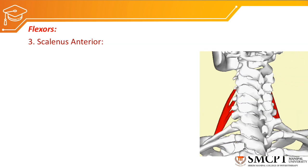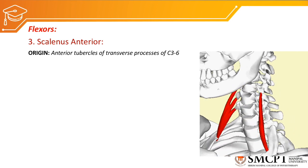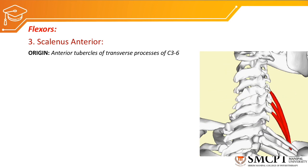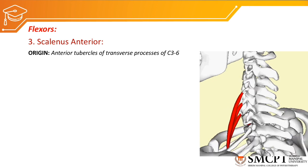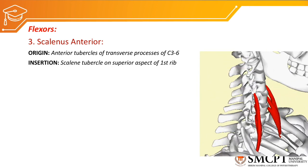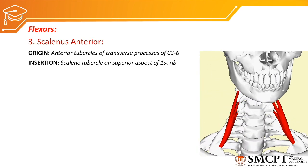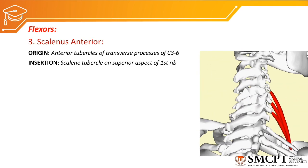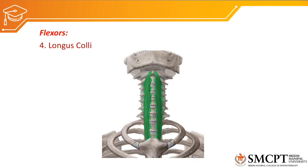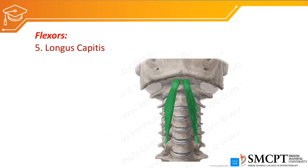Another strong flexor is scalenus anterior, coming from the anterior tubercle of the transverse process of C3 to C6, and inserting to the scalene tubercle on the superior aspect of the first rib. Next flexors are the longus colli, which are the deep flexors coming from the anterior aspect of the vertebral body and anterior tubercle of the transverse process, and longus capitis, which also originates from the anterior aspect.